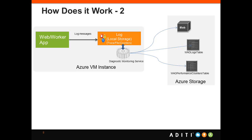Looking at it in a little more detail: here you have the Azure VM instance, then you have a web or worker application which is logging to your local storage — that is trace file encounters. The diagnostic monitoring service is always running, getting this information, and transferring it to Azure storage. Depending on the type of log captured, it will either transfer to the blob or to respective tables — there are multiple tables used for logging the information.